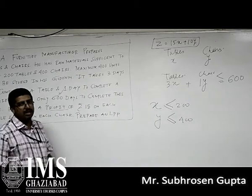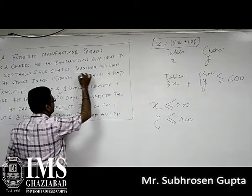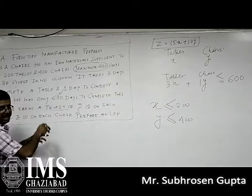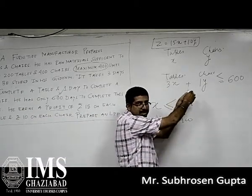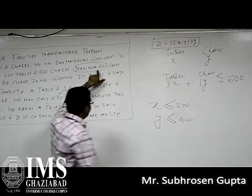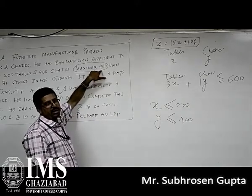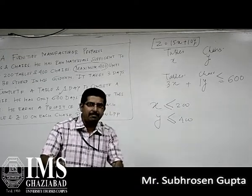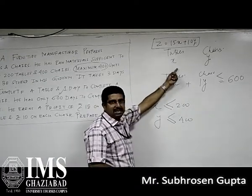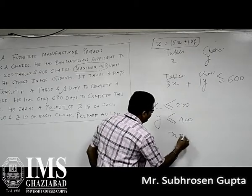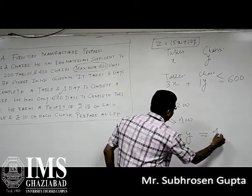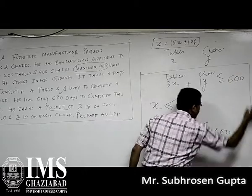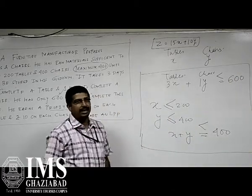Maximum 400 units can be stored. We have maximum 400 in one pair, 200 and 400 in another pair, and three days and one day in another pair — all those pairs form constraints. We have a maximum of 400 units we can store at one place. 400 units means some chairs and some tables together making 400 in number. Number of tables is X, number of chairs is Y, and together we have a space of either 400 or less than 400, so X + Y ≤ 400. This is our linear programming equation, and this is the objective function.